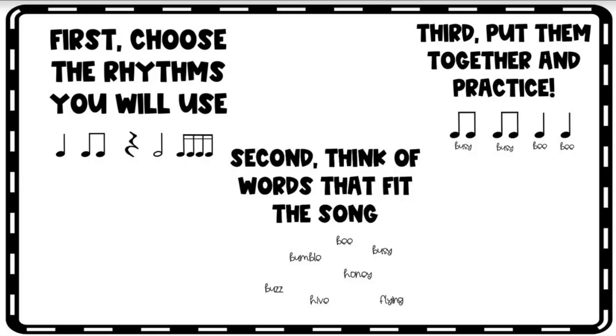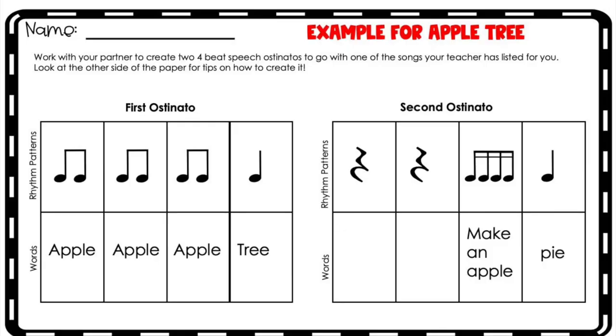Once we've practiced that, it's time for students to write their own speech ostinato. I put a couple of songs on the board that they know and they have to add two different four-beat speech ostinatos to it using a worksheet. They choose their rhythms first, then think of words that fit the song. For example, if they pick 'Bee Bee Bumblebee,' they could use words like buzz, bumble, bee, busy, honey, hive, or flying — so their pattern might be 'busy busy bee bee.' They find a partner and get to work. Having an example on the board really helps; I get far fewer questions because students can reference it, and I just remind them to make their own patterns rather than copying.